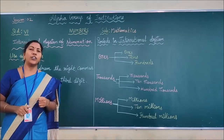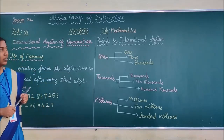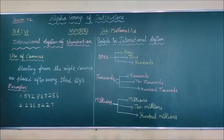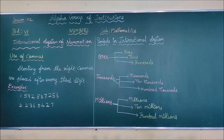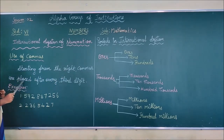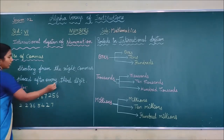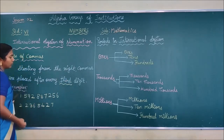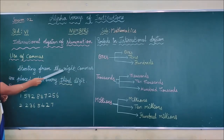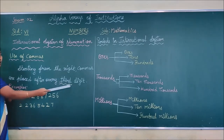Today, children, we are going to see the international system of numeration. Before seeing the system, let us learn how to use commas in the international system. Starting from the right, commas are placed at every third digit.